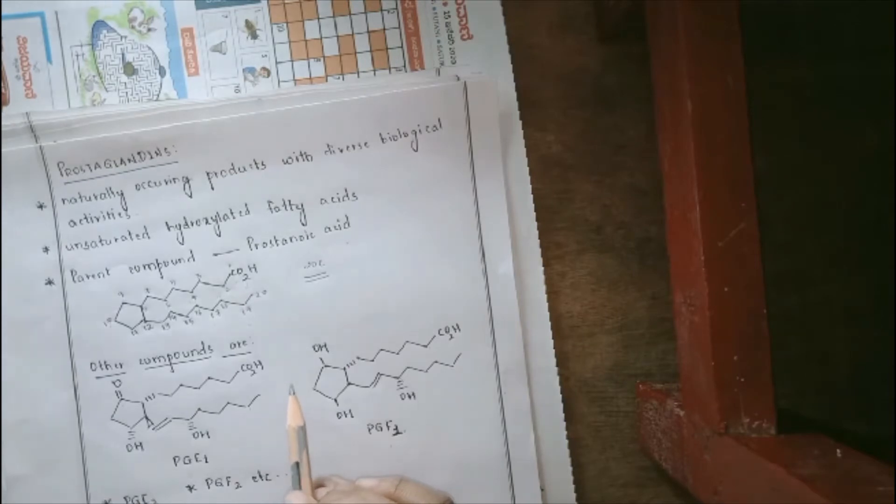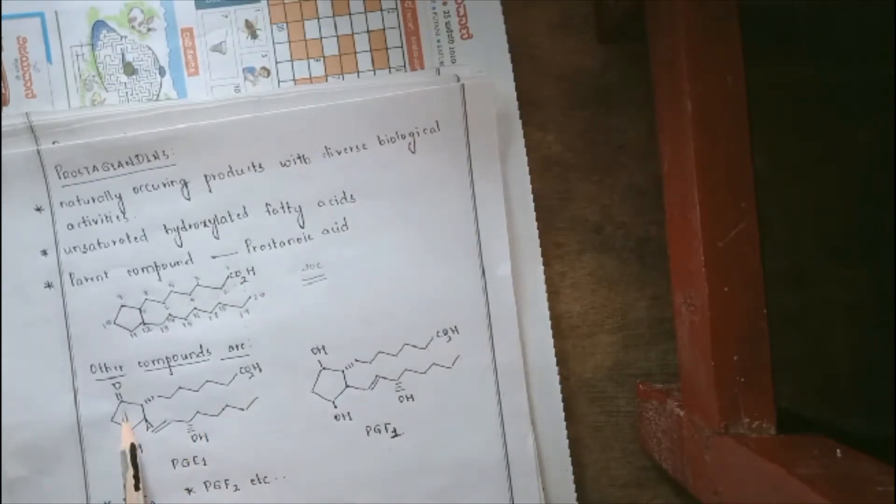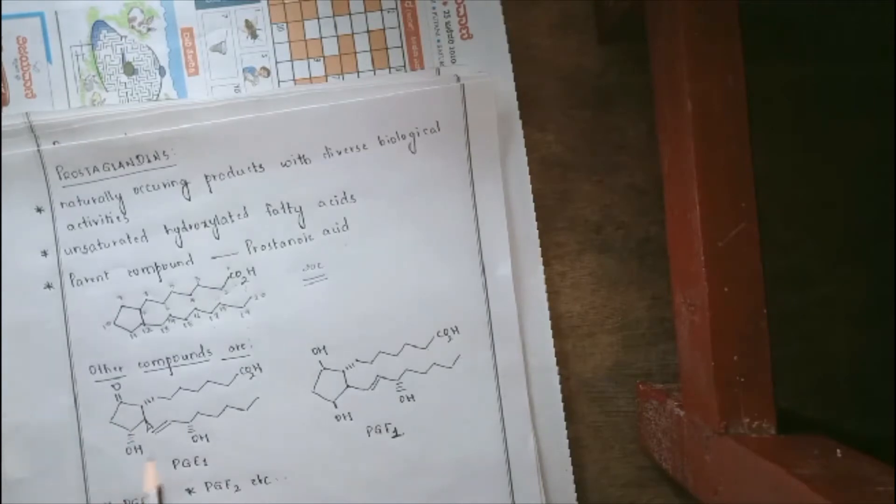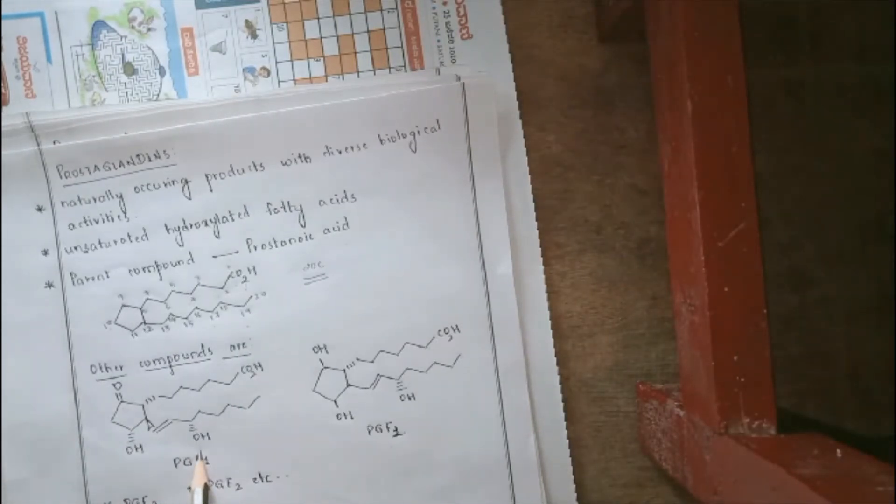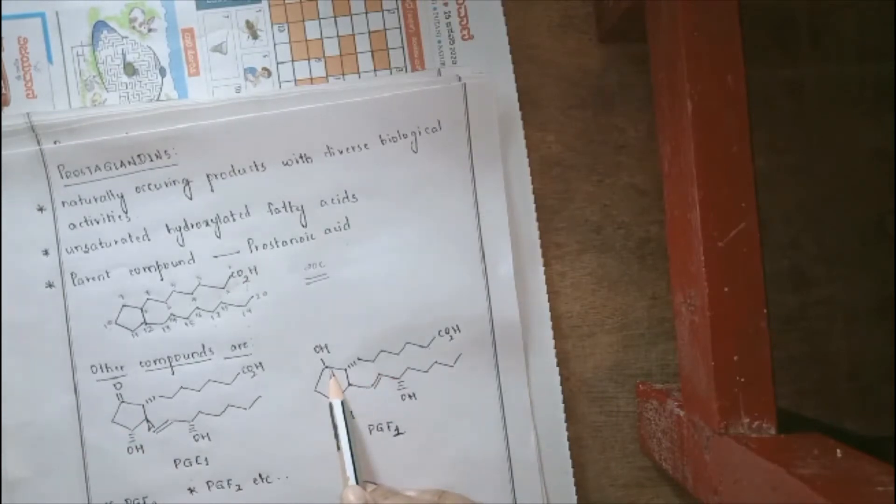Whereas now, in your PGE1 and PGF1, we can see that there is a presence of a carboxylic acid, there is a presence of a carbonyl carbon, presence of an OH, presence of a double bond. There is also a presence of an OH at position number 15, so on and so forth. We can also see that in PGF1, instead of the presence of a carbonyl group at position number 9, there is an OH present.